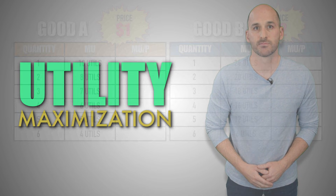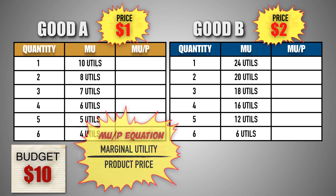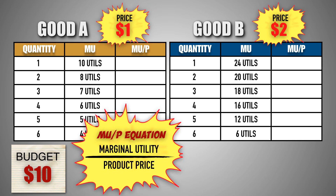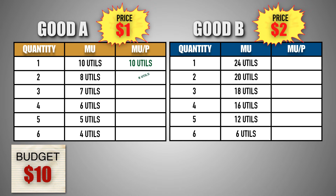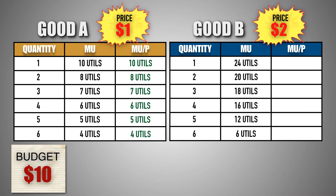Let's try it together. Assume that a consumer has a budget of $10 and wants to buy two goods, good A and good B. The consumer wants to spend their entire income and must find the combination of good A and good B within their $10 budget that maximizes their utility. To start, we must calculate the marginal utility per dollar for each unit of good A, using the price of good A and the marginal utility gain per unit. Next, we must calculate the marginal utility per dollar for each unit of good B, using the price of good B and the marginal utility gained per unit.